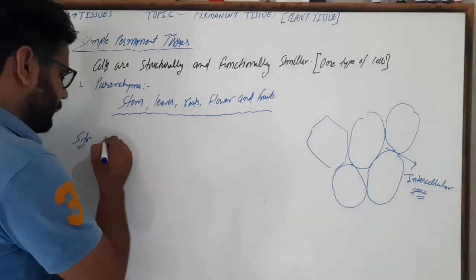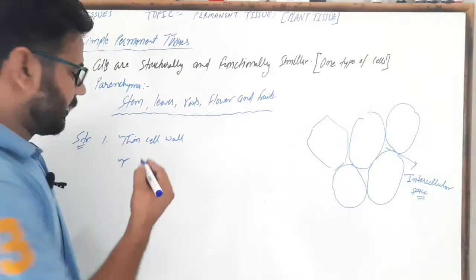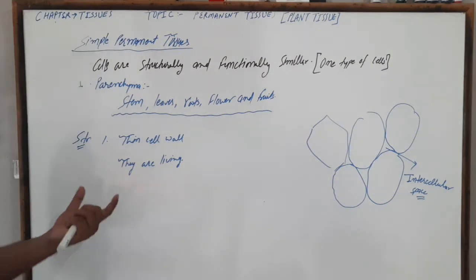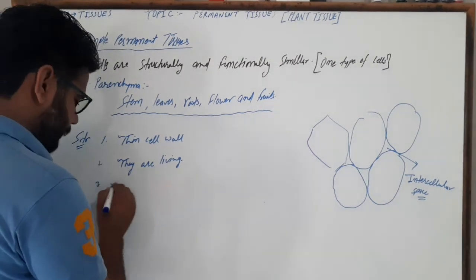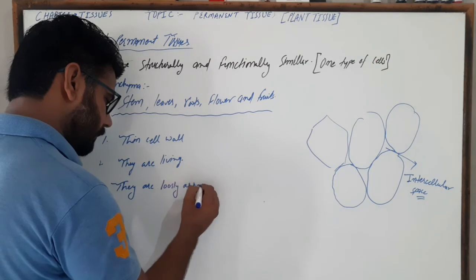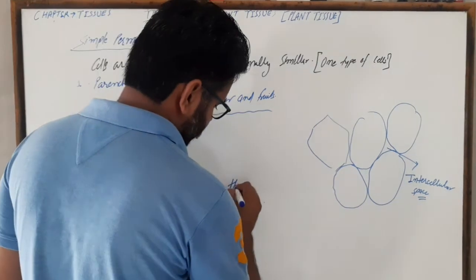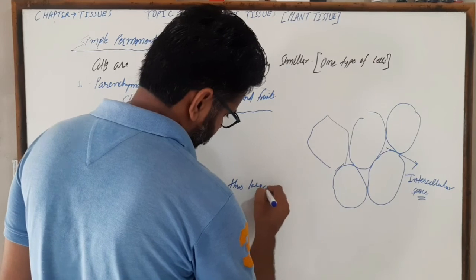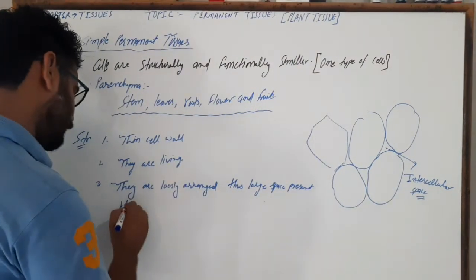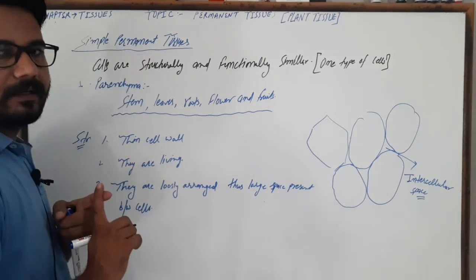Structure summary: the first point is thin cell wall. Second, they are living cells. Third, they are loosely arranged, and thus large spaces present between cells are called intercellular space.